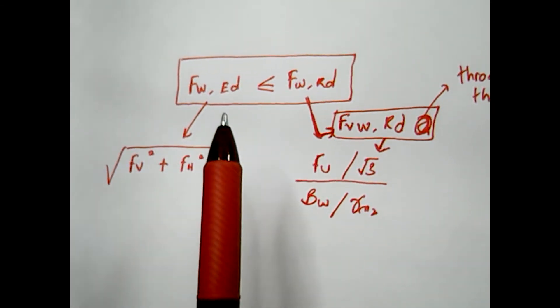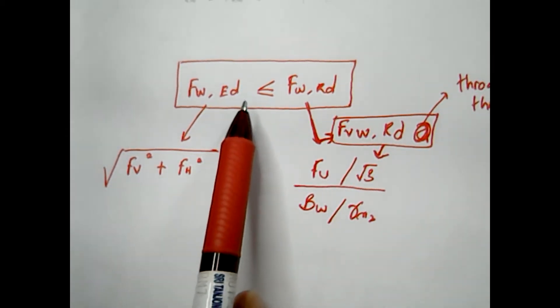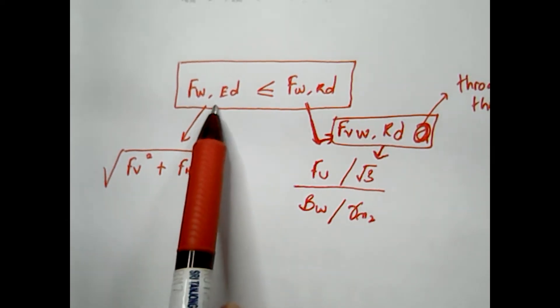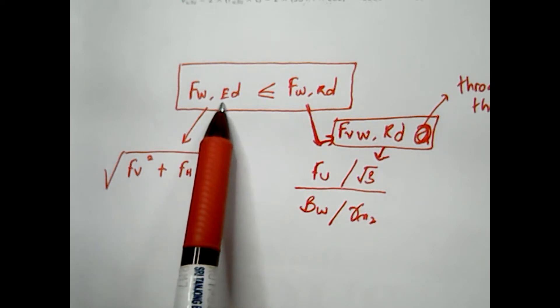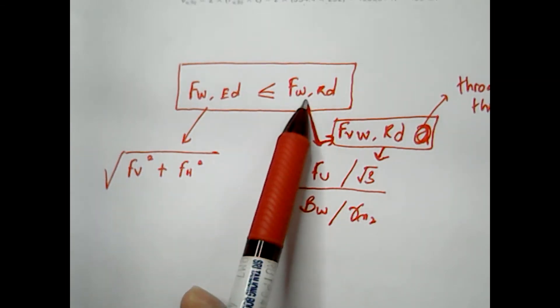The design resistance of fillet weld will be adequate if at all points the design value of the weld, which is force per unit length, is less than or equal to the design weld resistance per unit length.